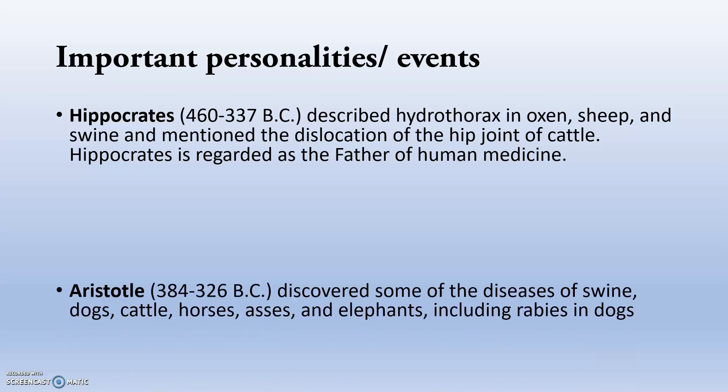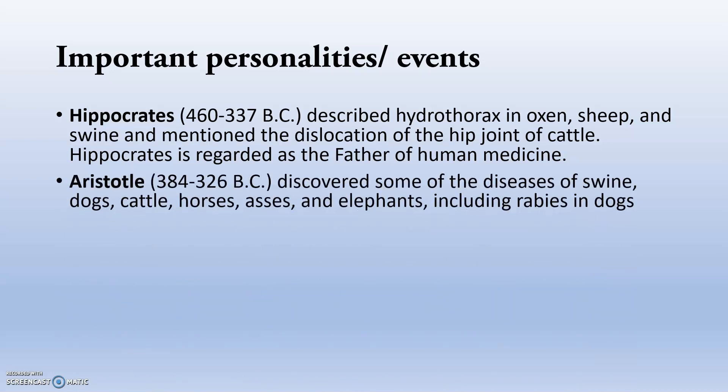Hippocrates described hydrothorax in oxen, sheep, and swine, and mentioned the dislocation of the hip joint in cattle. Hippocrates is regarded as the father of human medicine. Aristotle discovered some diseases of swine, dogs, cattle, horses, asses, and elephants, including rabies in dogs.